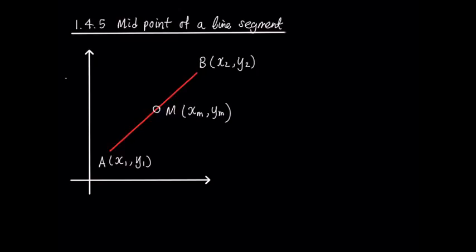To find the midpoint, we need to find the average value of the coordinates for those two points A and B. So we can write XM = (X1 + X2)/2, and YM = (Y1 + Y2)/2.